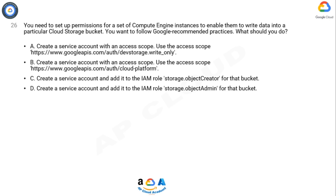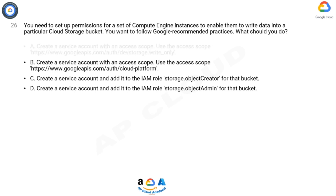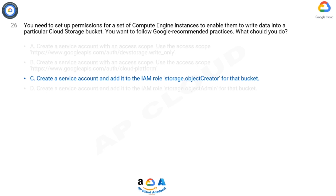The correct answer is C. Explanation: Let's look at the key requirements from the question — one: set up permissions for a set of Compute Engine instances to enable them to write data into a particular Cloud Storage bucket; two: follow Google recommended practices. Option A: There is no such scope https://www.googleapis.com/auth/devstorage.write_only — please refer to the official Google docs.